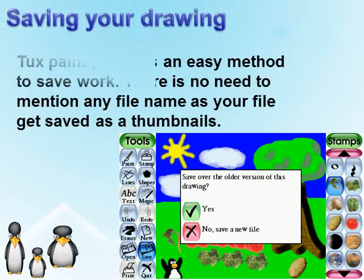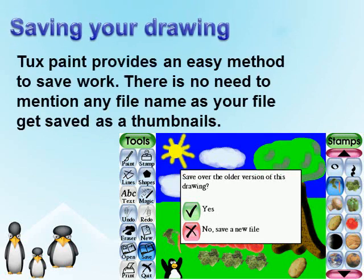Saving a File: TuxPaint provides an easy method to save work. Click on the save tool. There is no need to mention the file name. TuxPaint saves your file as a thumbnail rather than giving it a file name. The TuxPaint mascot confirms that you have successfully saved your file.